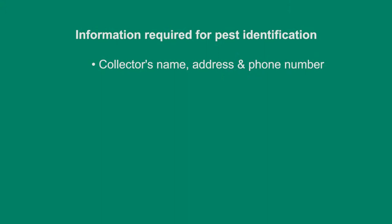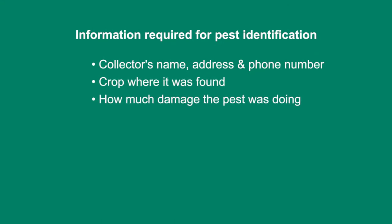If you find an unfamiliar pest and you can't identify it, you do need to take a photo — and it needs to be a good quality photo — and with that photo you need to provide some information: the name and address of the collector, the crop it was found on, how much damage it was doing, the GPS location, and the level of infestation.